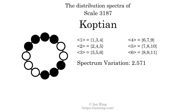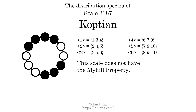The spectrum variation is the sum of all the widths, divided by the number of tones. The spectrum variation of this scale is 2.571. Since the variation is greater than 0, this indicates that the scale is not perfectly even. The highest spectrum width is 3. Since this is greater than 1, we know that this scale is not maximally even. If every spectrum has exactly 2 specific intervals, we call that the Myhill property. This scale does not have the Myhill property. Since the generic interval ranges overlap, this scale is an improper scale.